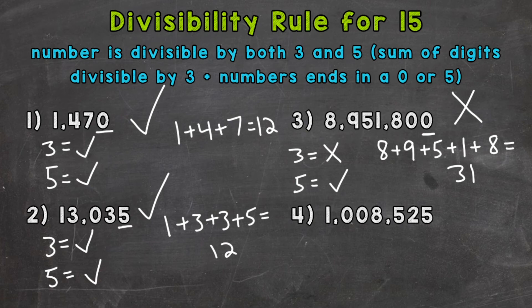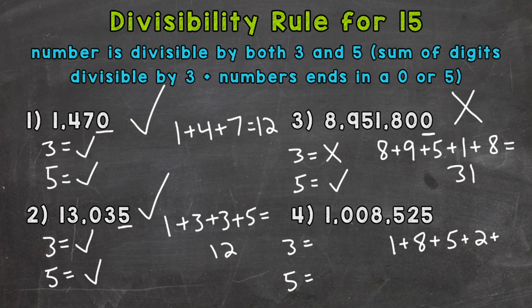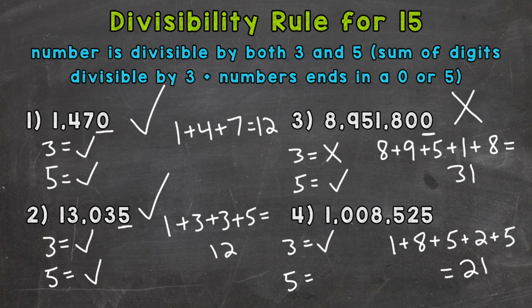Lastly, number four: one million eight thousand five hundred twenty-five. The sum of the digits: one plus eight plus five plus two plus five. One plus eight is nine, plus five is 14, plus two is 16, plus five we get 21. Now 21 is divisible by three — 21 divided by three equals seven with no remainder. So our original number is divisible by three. Our number ends in a five, so it's divisible by five. Therefore, one million eight thousand five hundred twenty-five is divisible by both three and five, and therefore divisible by 15.